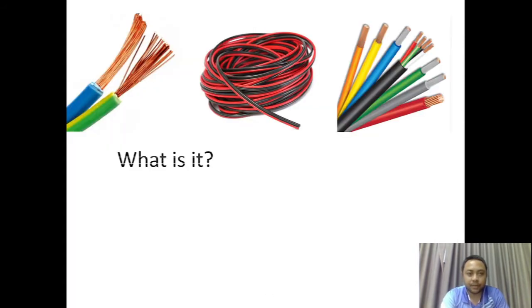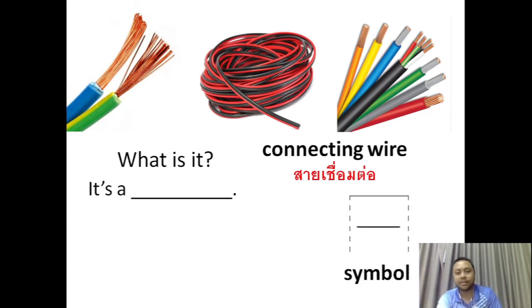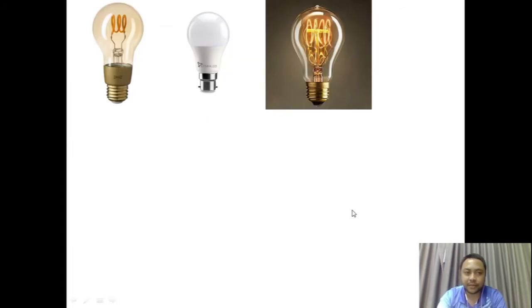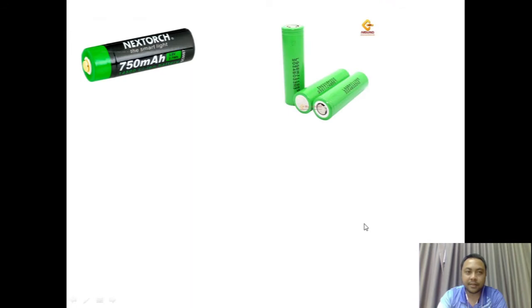What is it? It's a connecting wire. The symbol of a connecting wire is this one. What is it? It's a bulb. The symbol of a bulb is this one.